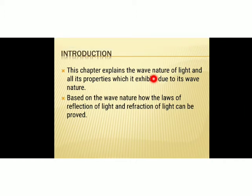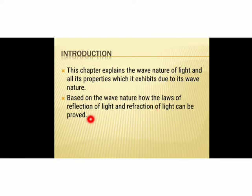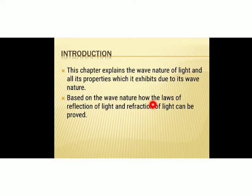This chapter explains the wave nature of light and all its properties which it exhibits due to its wave nature. Based on the wave nature, how the laws of reflection and refraction of light can be proved. We are going to discuss reflection as well as refraction phenomena of light based on its wave nature. Till now we explained all these concepts based on the particle nature of light — we considered light as a ray. That is why the previous chapter is called ray optics. But in this chapter we will consider light as a wave and discuss reflection and refraction accordingly.